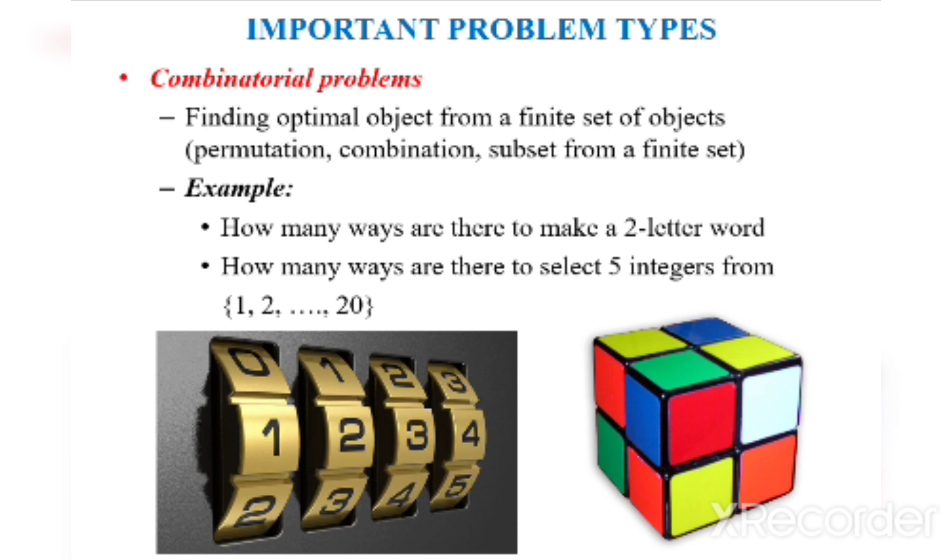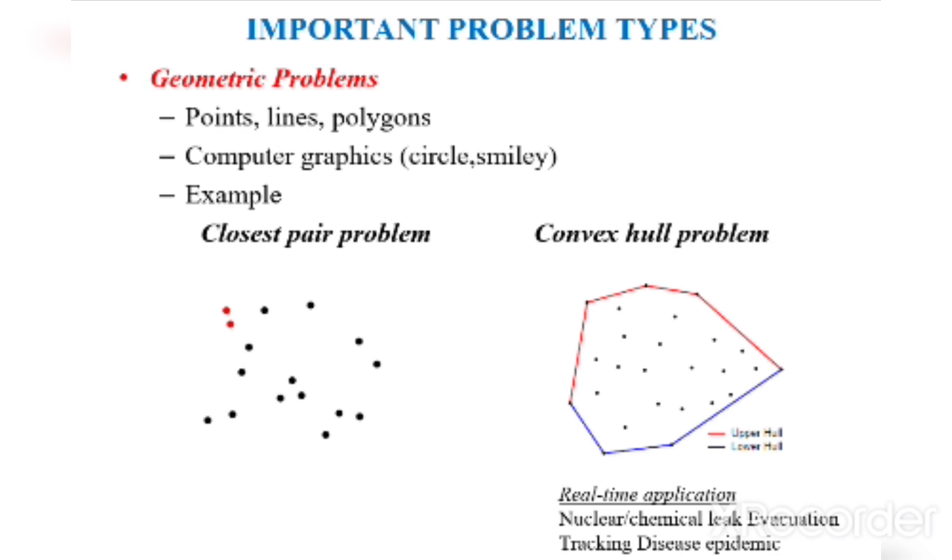How many ways are there to select five integers from 1 to 20? The sixth one is geometric problems. Geometric problems include points, lines, polygons, computer graphics like circle and smiley.